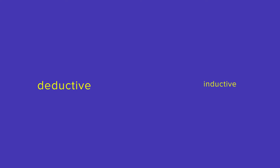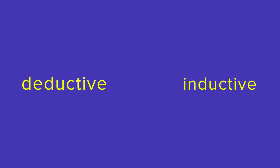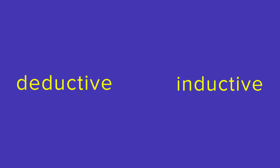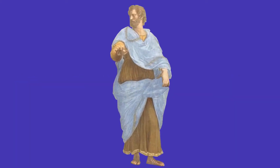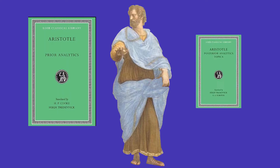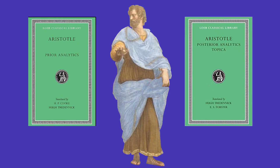There are several different ways of structuring arguments. Some of the oldest recorded are deductive reasoning and inductive reasoning, also referred to as deductive and inductive logic. These have been around since at least Aristotle, 2500 years ago, in his books titled The Prior Analytics and Posterior Analytics, which deal with deduction and induction respectively. So, what are the differences between deductive and inductive reasoning?